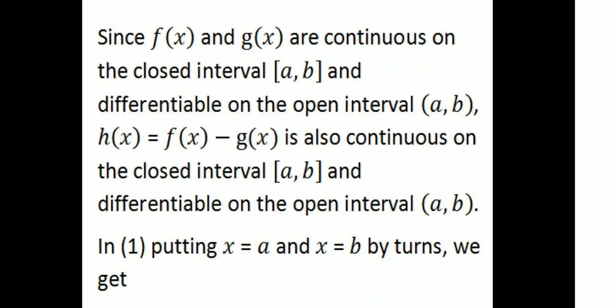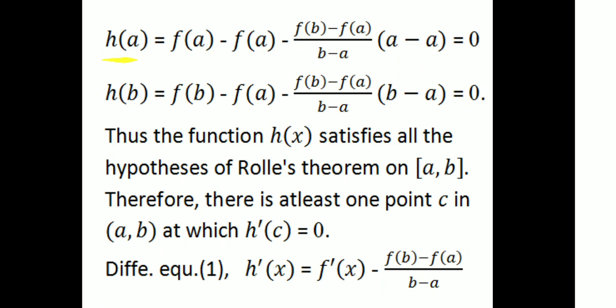Substituting x = a: H(a) = F(a) − F(a) − [f(b) − f(a)] / (b − a) · (a − a) = 0, since (a − a) = 0. Substituting x = b: H(b) = F(b) − F(a) − [f(b) − f(a)] / (b − a) · (b − a). The (b − a) terms cancel, and F(b) − F(b) = 0, so H(b) = 0. Thus H(a) = H(b) = 0.